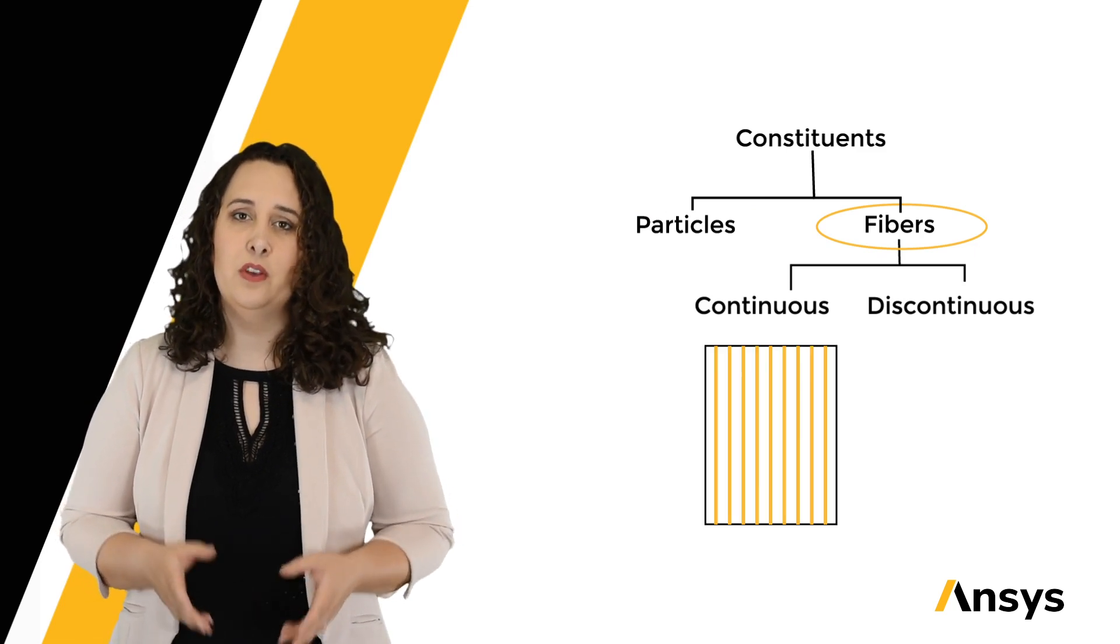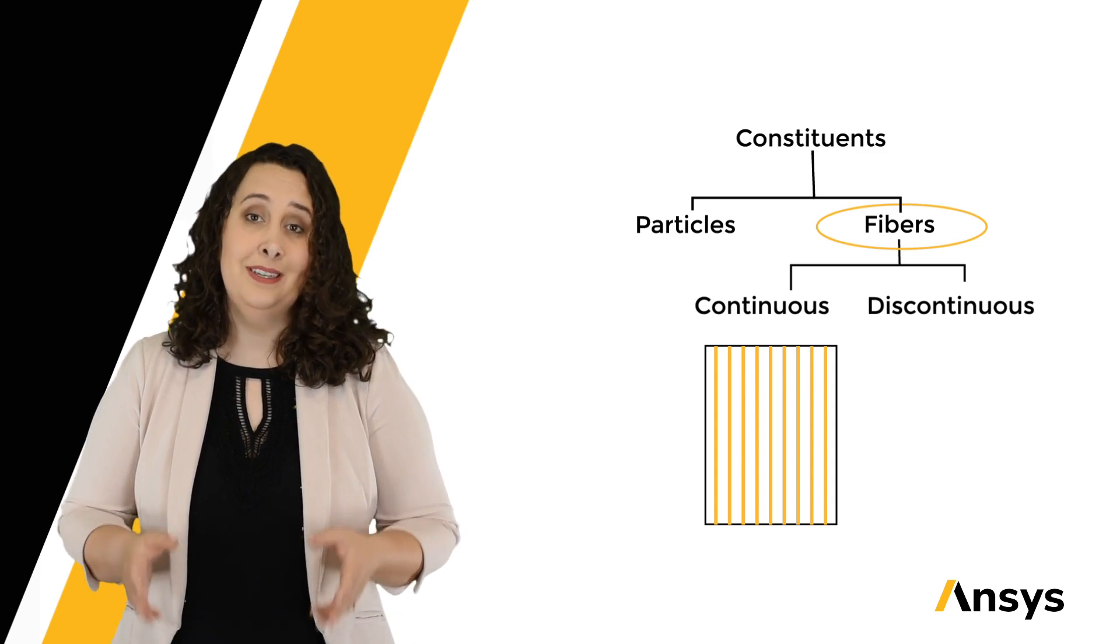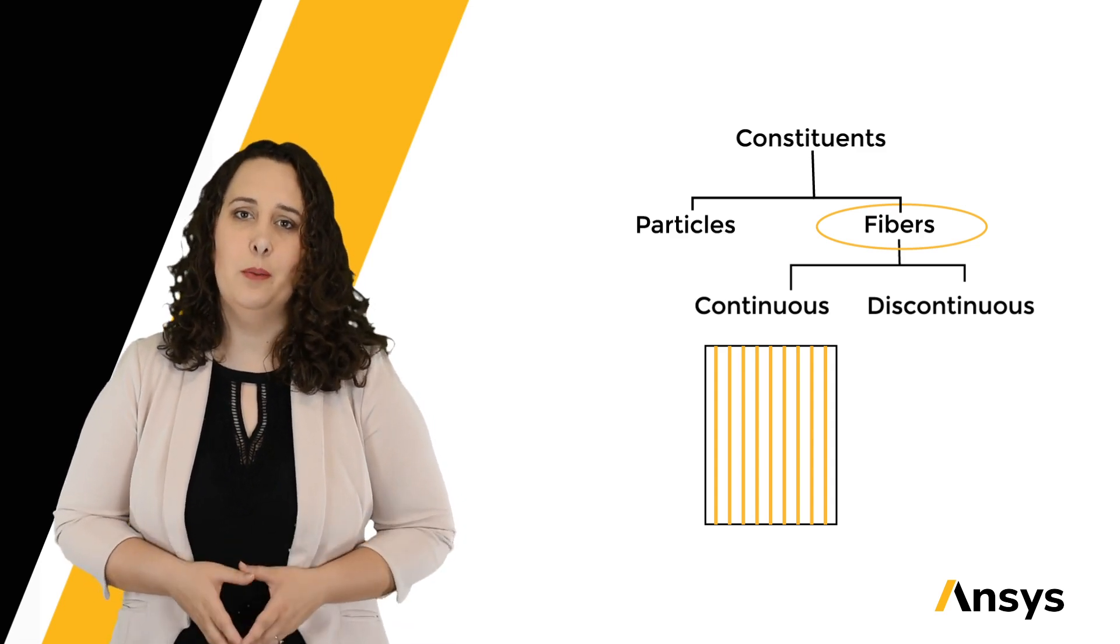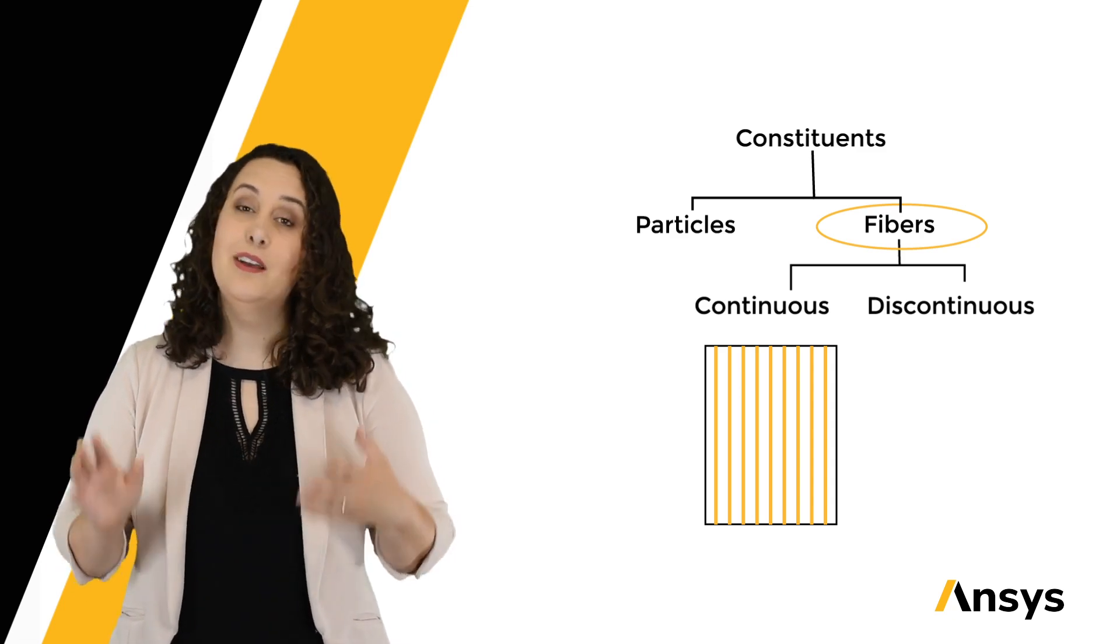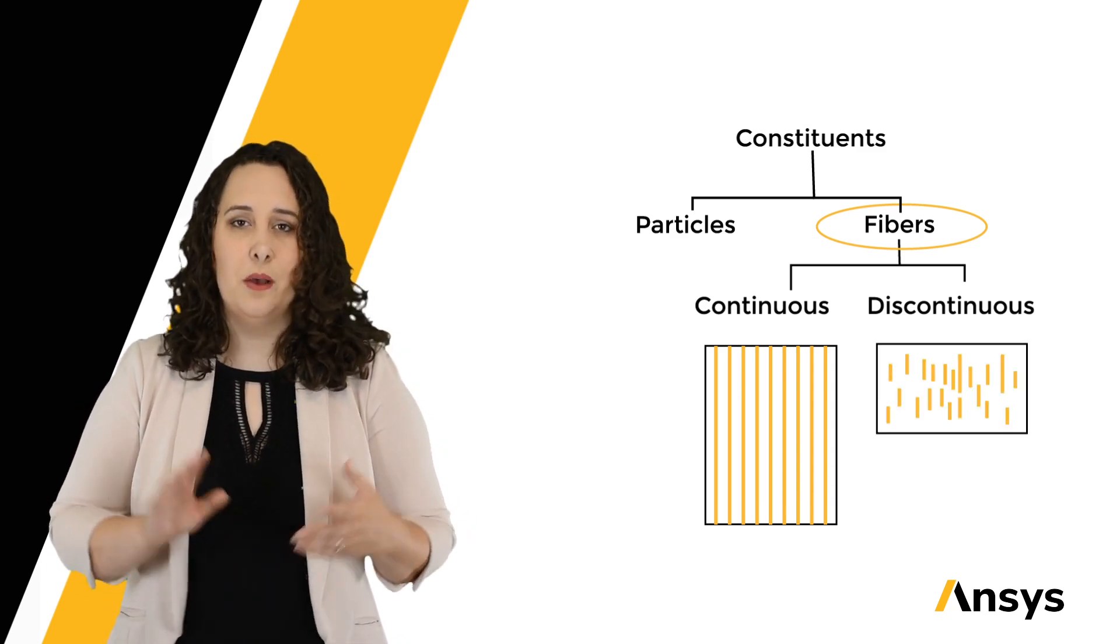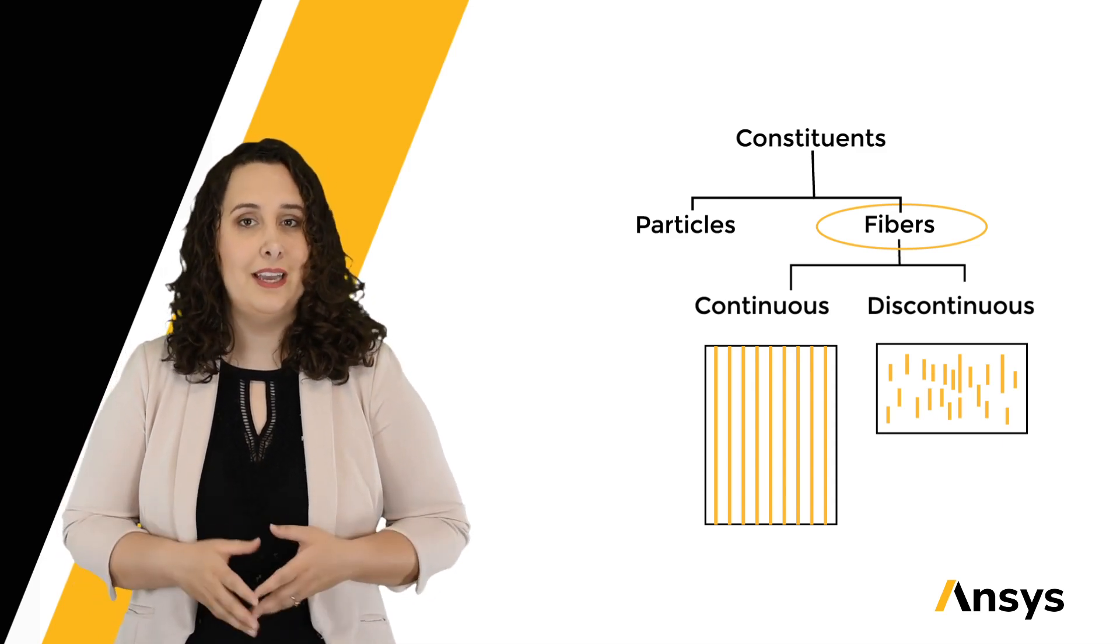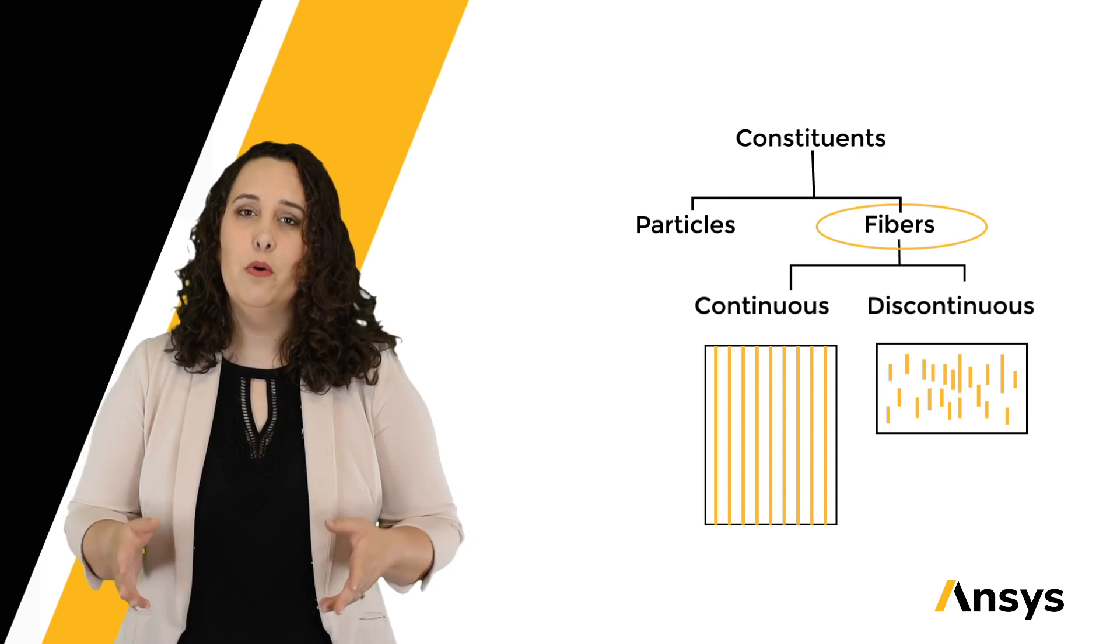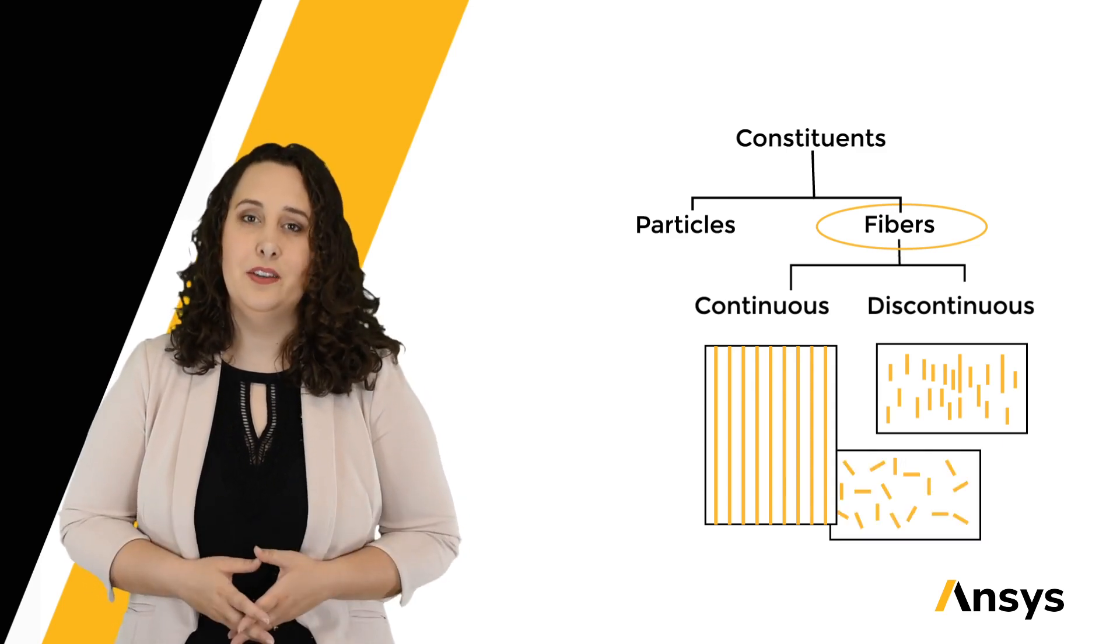For my continuous fibers, I'm dealing with a highly anisotropic system. For my discontinuous fibers, I have a couple options. I can either try to orientate my short fibers along some axis of interest within my composite, again giving me a highly anisotropic system, or I can randomly align them, giving me a relatively isotropic material.